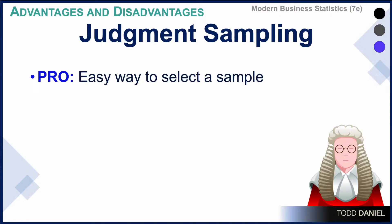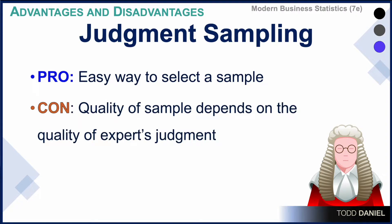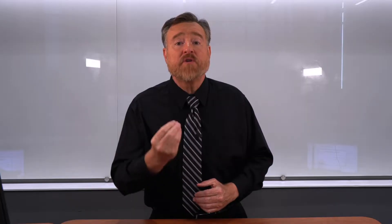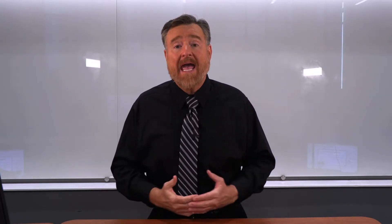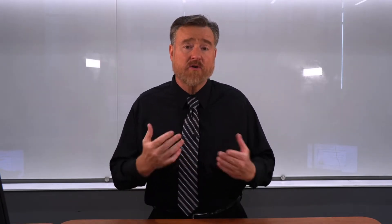We may not be able to make that judgment ourselves, and so we rely on the expertise of a judge to tell us who should or should not be included — who are the most representative individuals for this population. The advantage of using judgment sampling is that it is an easy way to select a sample; we let someone else do all the work. On the other hand, the quality of your sample will depend upon the quality of your expert's judgment. It is up to you as a researcher to identify a judge who can accurately tell you which individuals are truly representative of this population.